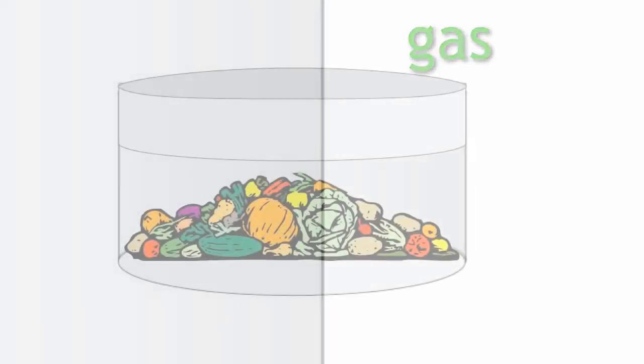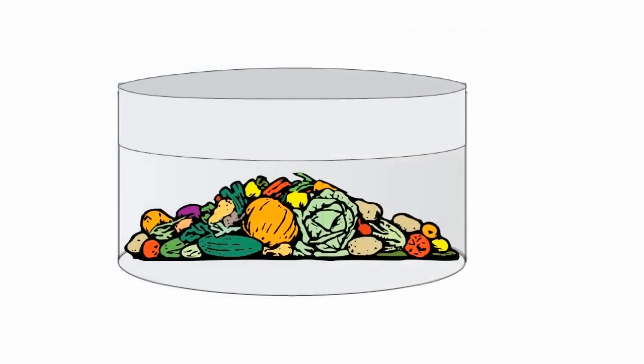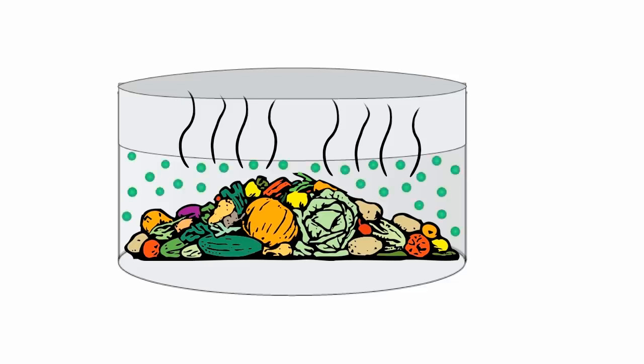So, the smelly gases given off by rotting vegetables in a sealed box will fill the box with rotting vegetable smell, but you won't be able to smell them outside the box.